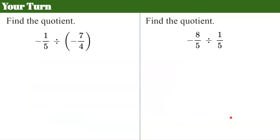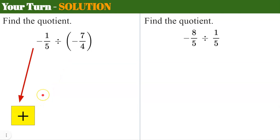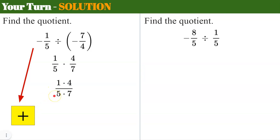Your turn. Pause now, solve, and find the quotient. Come back and hit play when you're done. Welcome back — let's check your work. I'm going to make a plan: I have a negative divided by a negative — same sign — positive quotient. Rewrite it to multiplication: keep one-fifth, change to multiply, and the reciprocal of seven-fourths is four-sevenths. Notice I dropped the negative signs because I've made my plan. Multiply our numerators: one times four is four. Multiply our denominators: five times seven is 35. My quotient is positive four thirty-fifths.